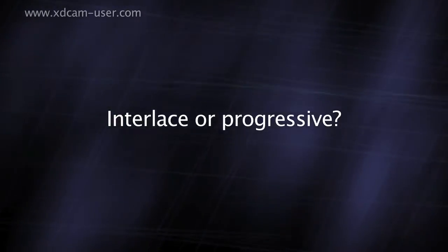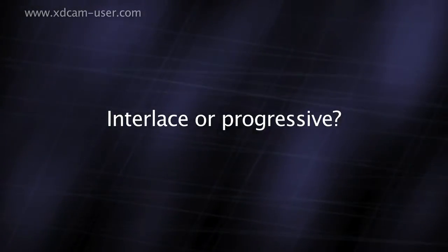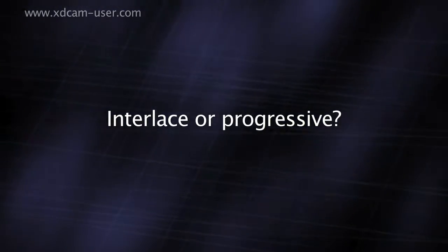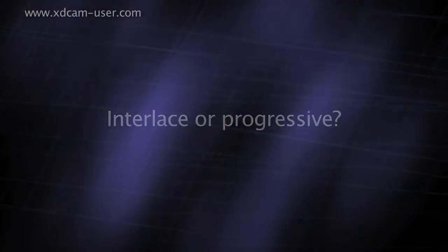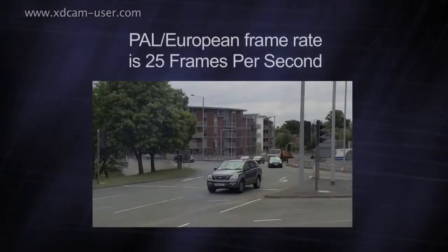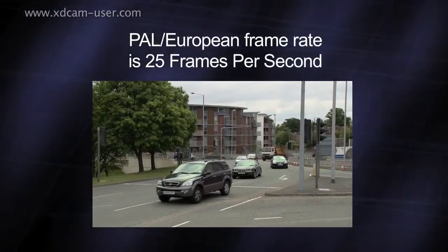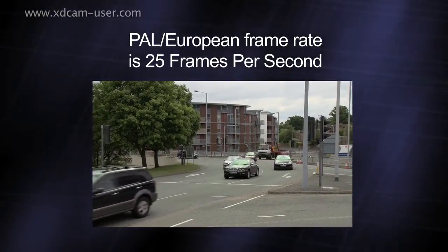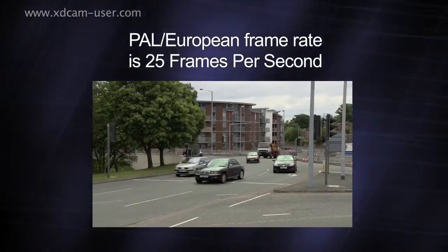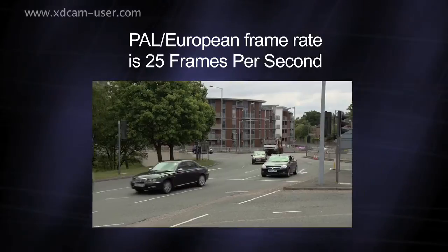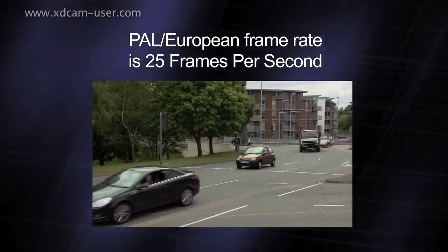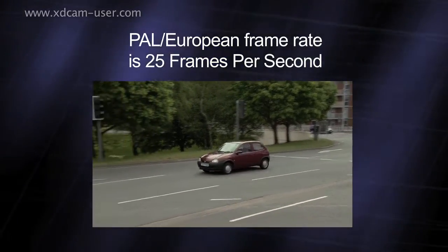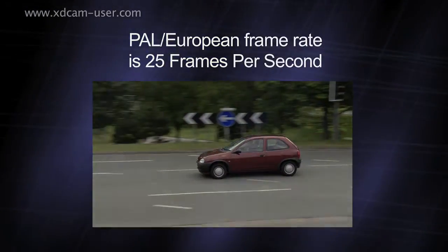Let's take a look at the differences between shooting interlaced and progressive. When you shoot a normal speed video clip in Europe, it will normally have a frame rate of 25 frames per second, whether you are shooting progressive or interlaced.